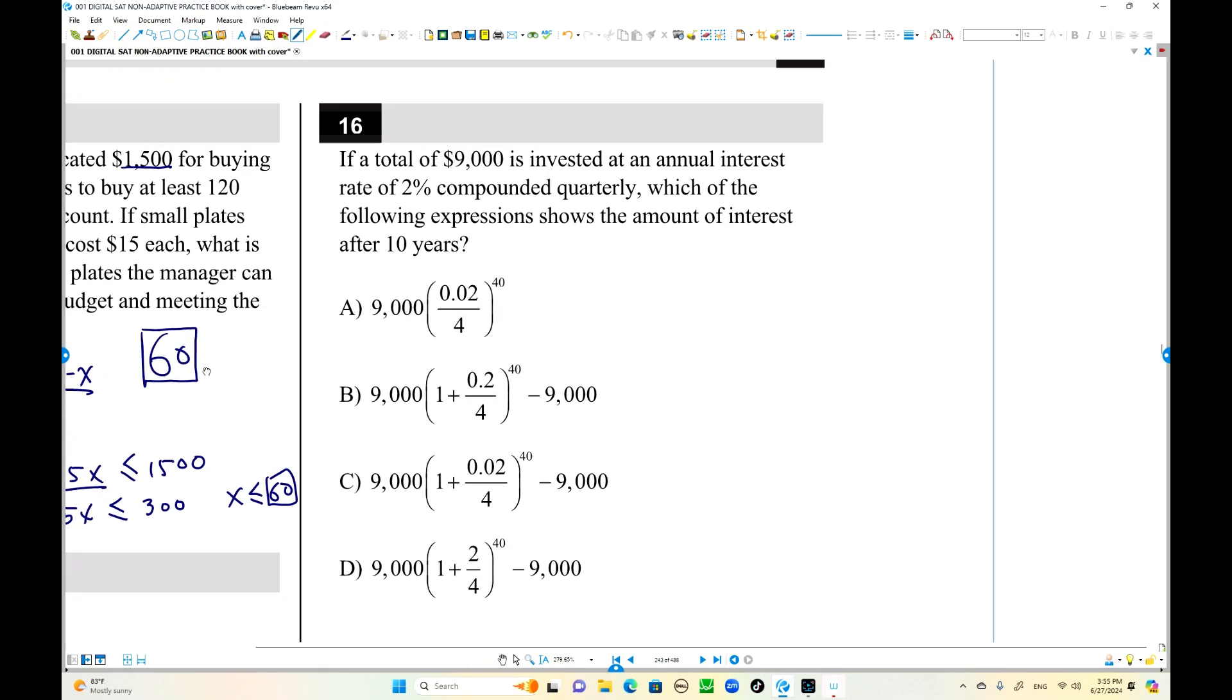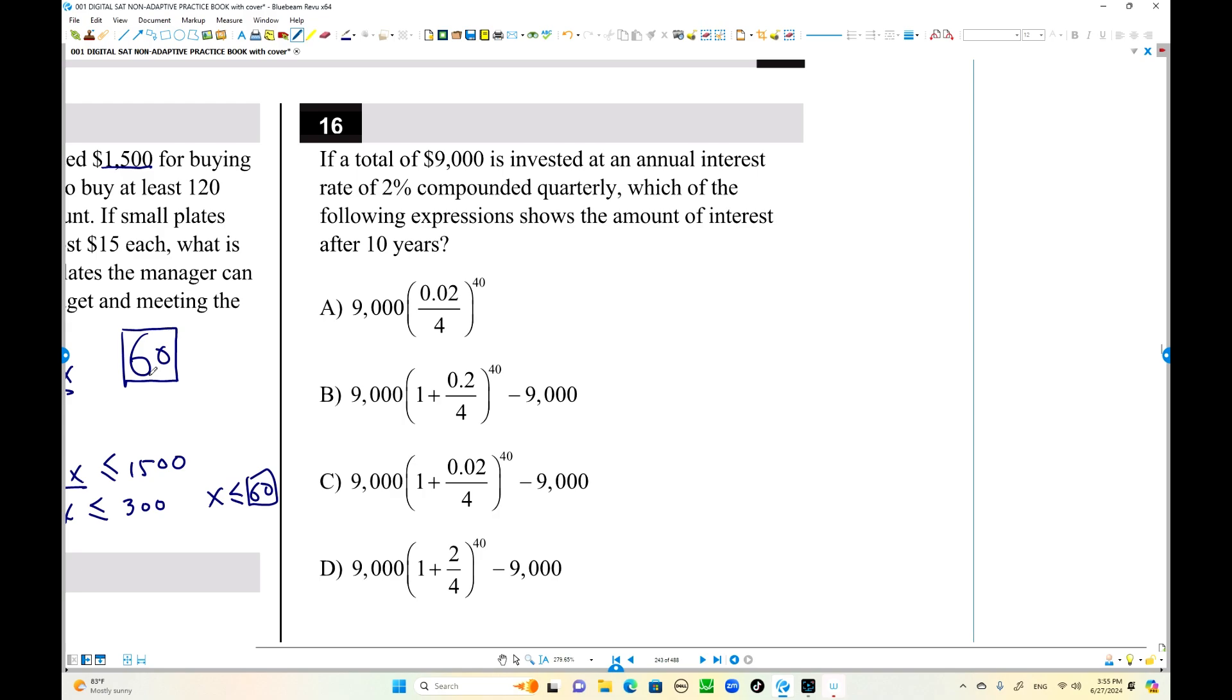Number 16. 9,000 invested at 2% annual interest compounded quarterly. The formula is A equals 9,000 times 1 plus 0.02 divided by 4 to the power of 40. This is for one year, quarterly is divided by 4. Number of quarters in 10 years: each year has 4 quarters times 4 is 40 quarters. But that's the total amount after 10 years. To find interest, subtract original starting amount 9,000. That's going to give us interest amount. Choice C is the answer.